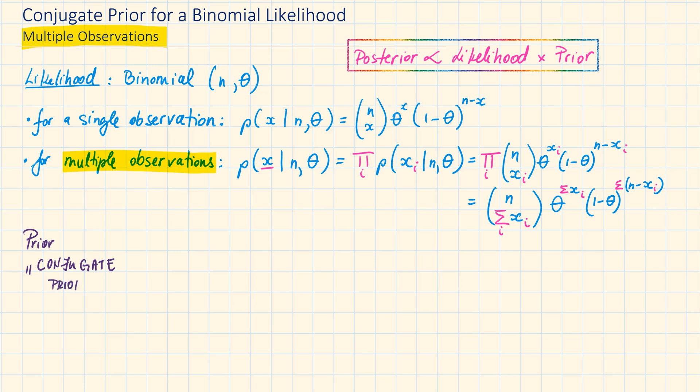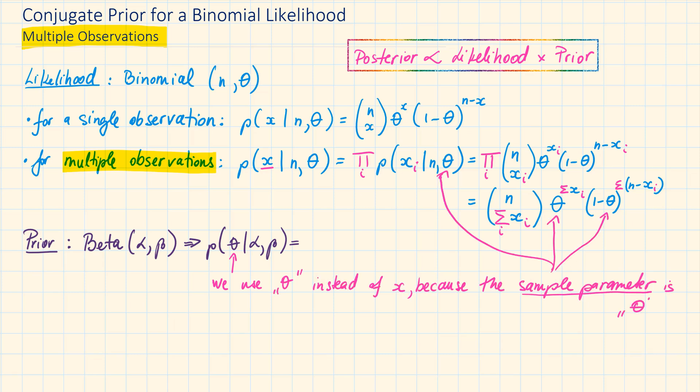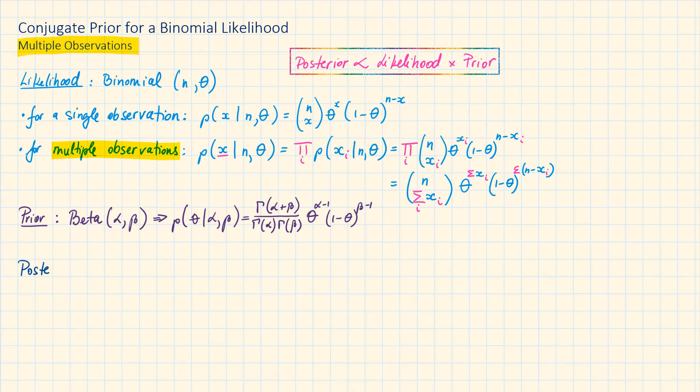For the conjugate prior, we will choose the beta distribution just as we've done in the previous video. We use theta instead of x because the sample parameter is theta. We can write this as the probability of theta given parameters alpha and beta equals gamma of alpha plus beta over gamma of alpha times gamma of beta times theta to the power of alpha minus 1 times 1 minus theta to the power of beta minus 1. We know that the posterior is proportional to the likelihood times prior.